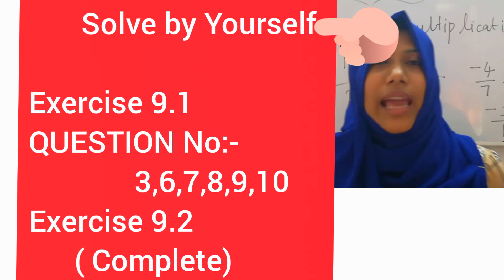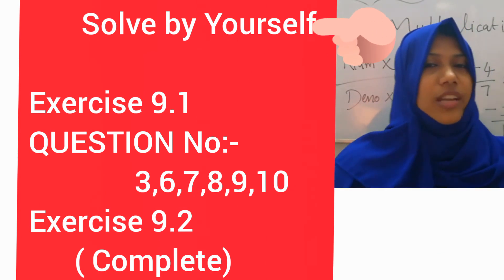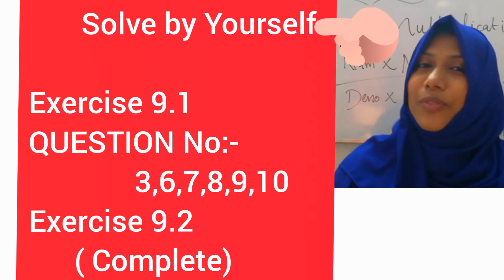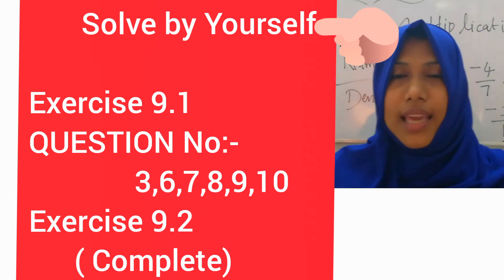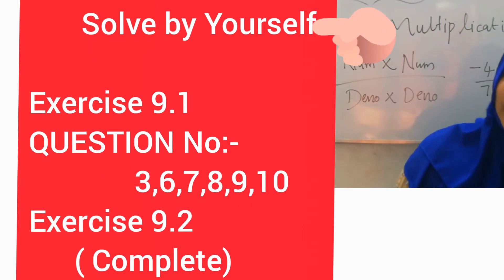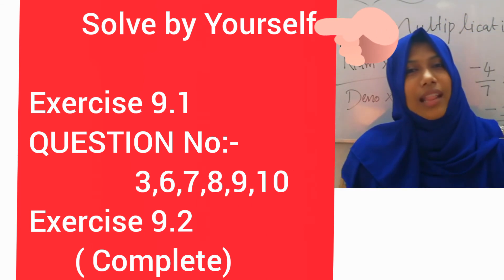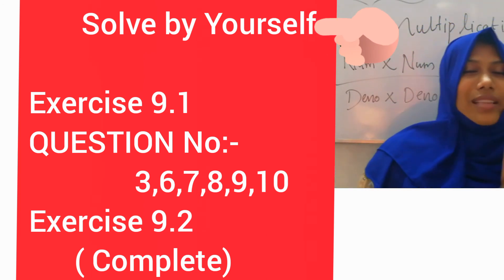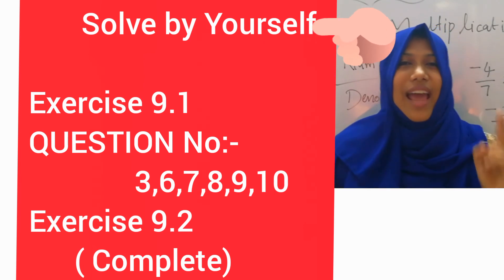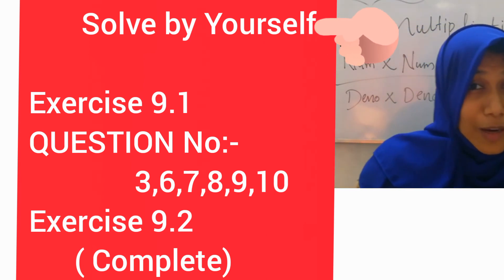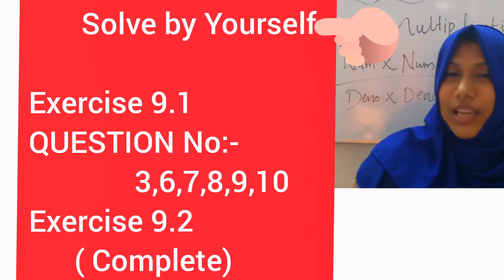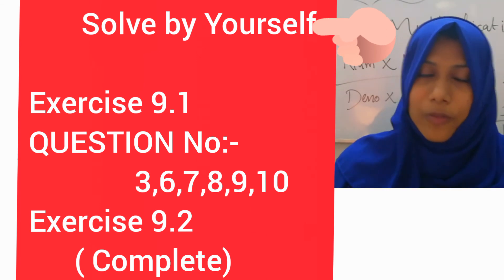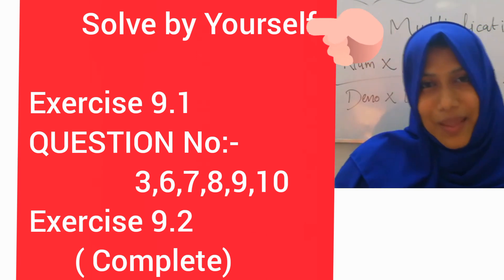My dear students, all operations of rational numbers are the same as in the case of fractions. The only difference is that rational numbers are in the form P by Q where Q is not equal to 0, and fractions include whole numbers, while rational numbers include integers. You have exercise problems — try to solve them by yourself and we will meet at the next class to clear your doubts. Thank you.